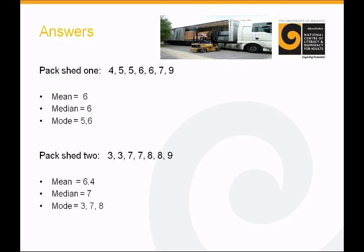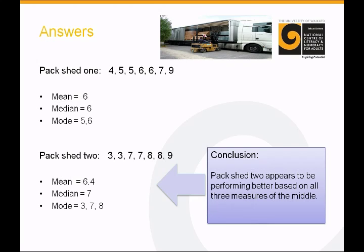Pack shed two, I worked out as the mean 6.4, the medium was seven, and the mode was three, seven, and eight. I also concluded that pack shed two appears to be performing better based on these three measures of the middle. And I understand there's some contention around that, given the lower performance from some of their days, and so we're going to look at whether measures of the middle are the most appropriate tool to compare these two on.